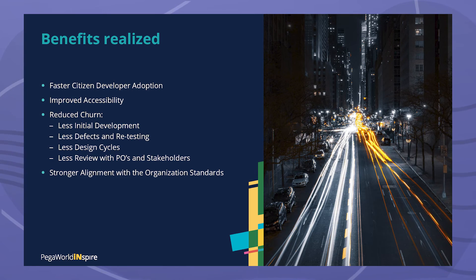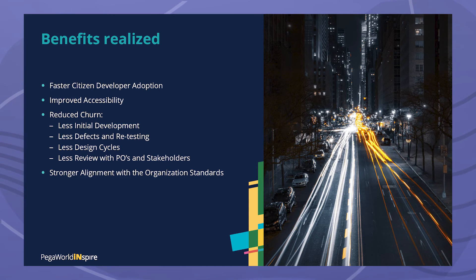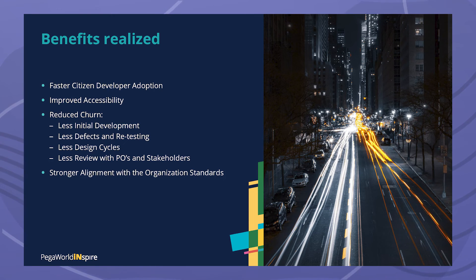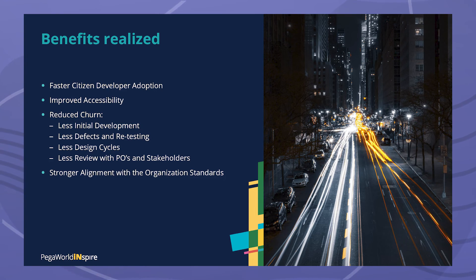Excellent, Tim. Thank you for that walkthrough — it looks like a repeatable process with broad application across the whole of government. For our audience today, especially those from the government perspective, can you touch on some of the benefits realized by government agencies and employees? Among the benefits realized, but certainly not limited to: faster citizen development adoption, improved accessibility, reduced churn across development, defects and retesting, less design cycles, and less churn and review with your stakeholders and product owners to form a stronger alignment with a strict organization standard.